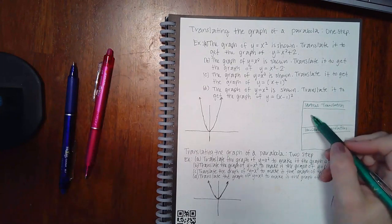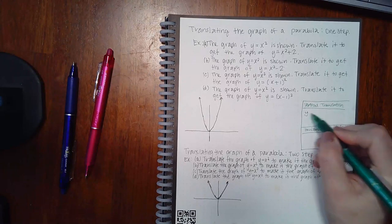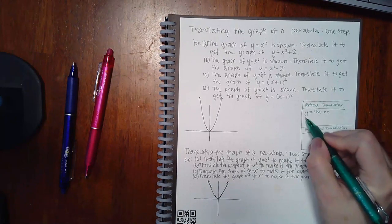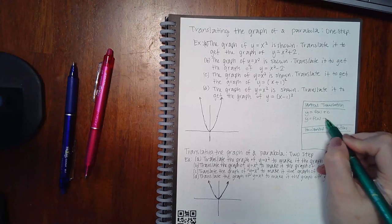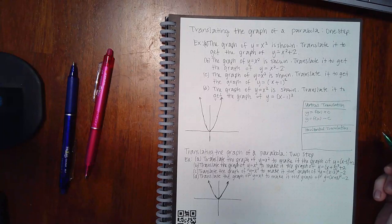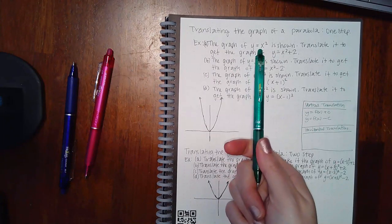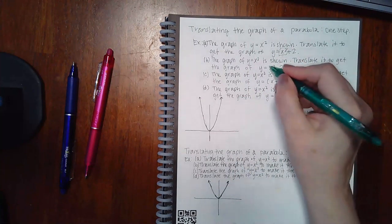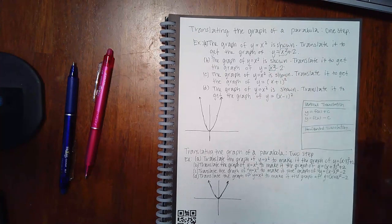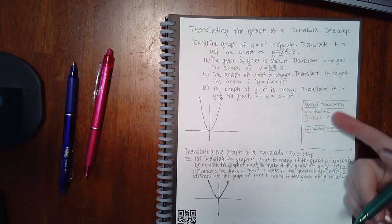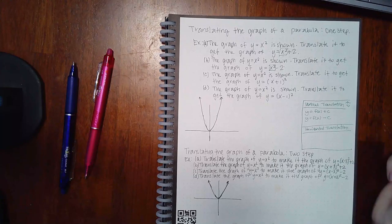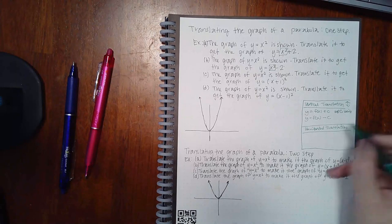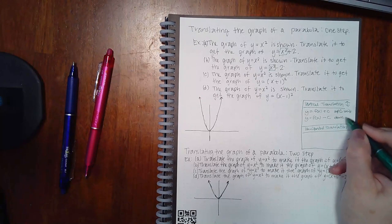For a vertical translation, you'll have your parent function and you'll either be adding a number outside of it or subtracting a number outside of it. In this case the basic function is x squared. Adding two on the outside or subtracting two on the outside are both cases of vertical translation — which means up or down. Adding a number makes the graph go up that many units; subtracting makes it go down that many units.